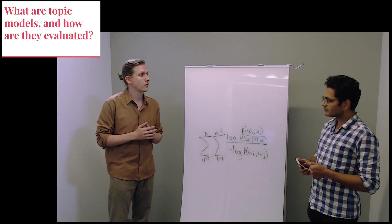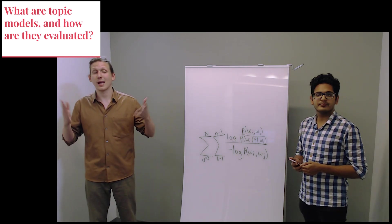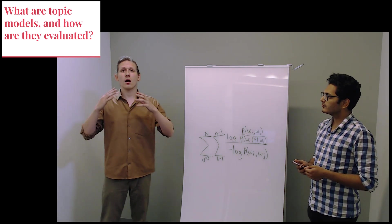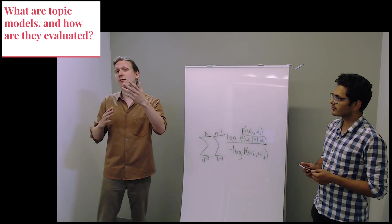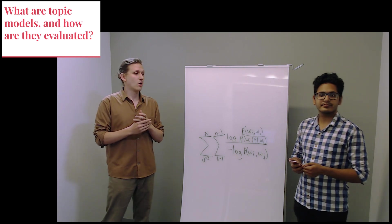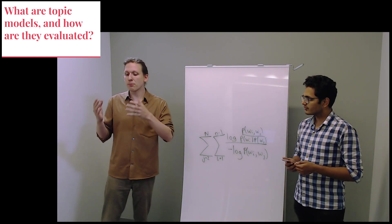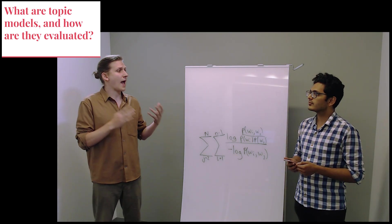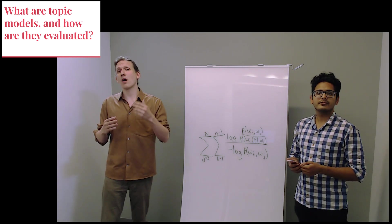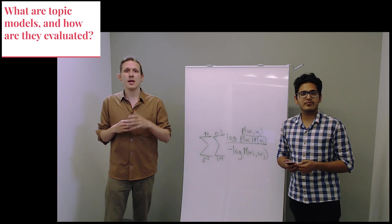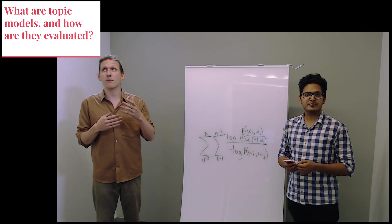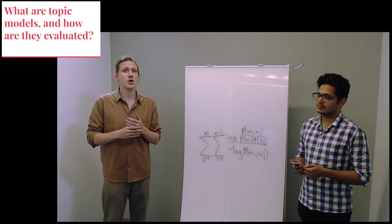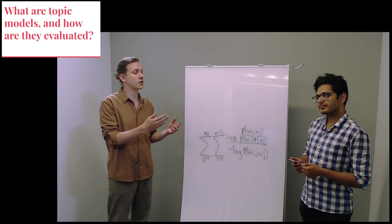So let's take a step back. What is the topic model and how are they evaluated? Well, a topic model is a generative model of text, specifically a generative model of documents. The way topic model works is by representing each document as an admixture of a fixed number of topics, say 50. Each topic is a distribution of words. For example, if you run a topic model on the New York Times, you might get topics about business, technology, and the arts.